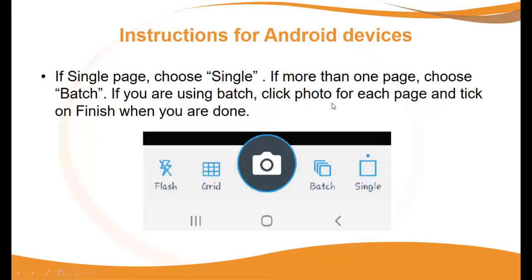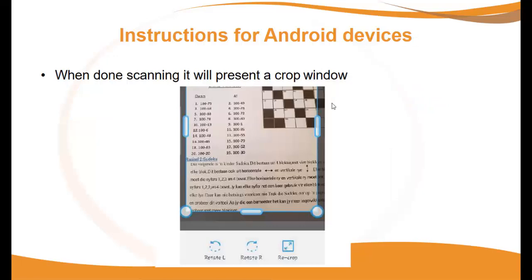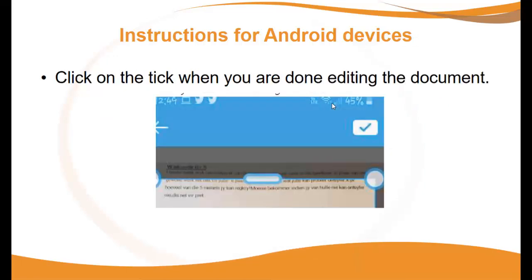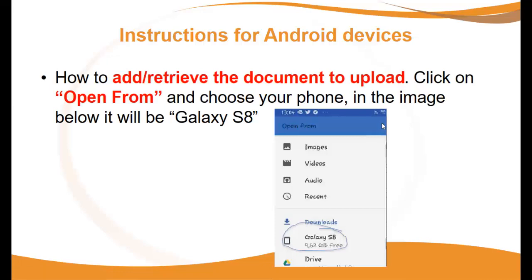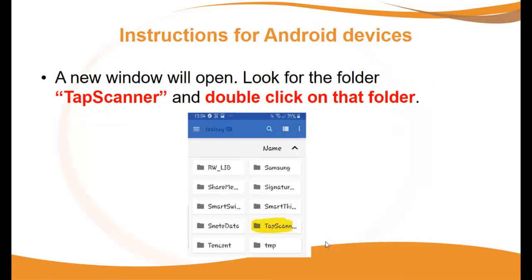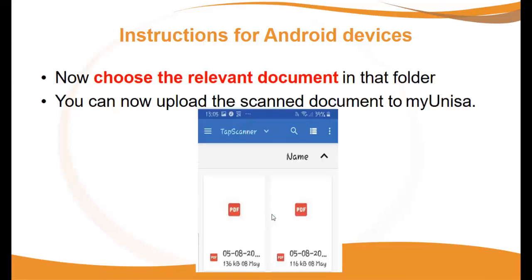If you are using Batch, click photo for each page and tap Finish when done. When scanning, it will present a crop window — click the tick when you are done editing. To add or retrieve the document for upload, click on 'Open from' and choose your phone, for example Galaxy S8. A new window will open — look for the folder, tap Scanner, and double-click on that folder. Choose the relevant document and remember what it was saved as. You can now upload the scanned document to MyUNISA.